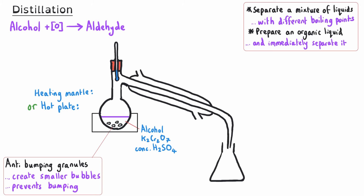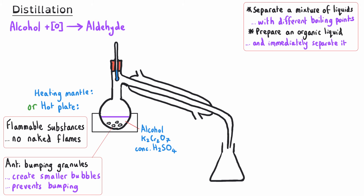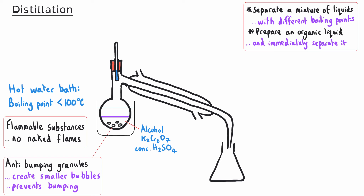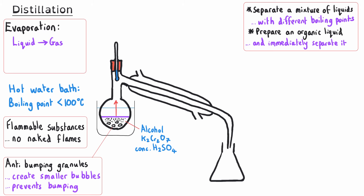The process of distillation requires us to heat our reaction mixture, and since most organic substances are flammable, it's important that we don't use any naked flames. We will be heating with a heating mantle, hot plate, or potentially a hot water bath. If we use a hot water bath, we are limited to a maximum of 100°C, so this is only appropriate if we're trying to boil something with a boiling point below 100°C. We heat our reaction mixture to the boiling point of one of our chemicals, and at that temperature the chemical will turn from a liquid into a gas. The chemical with the lower boiling point will evaporate first and rise up out of the round-bottomed flask.